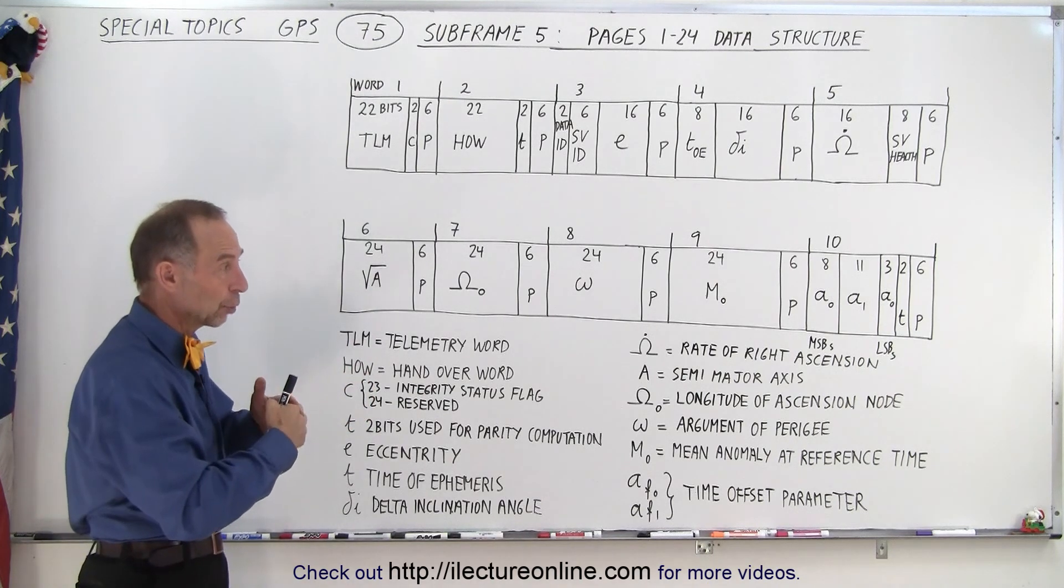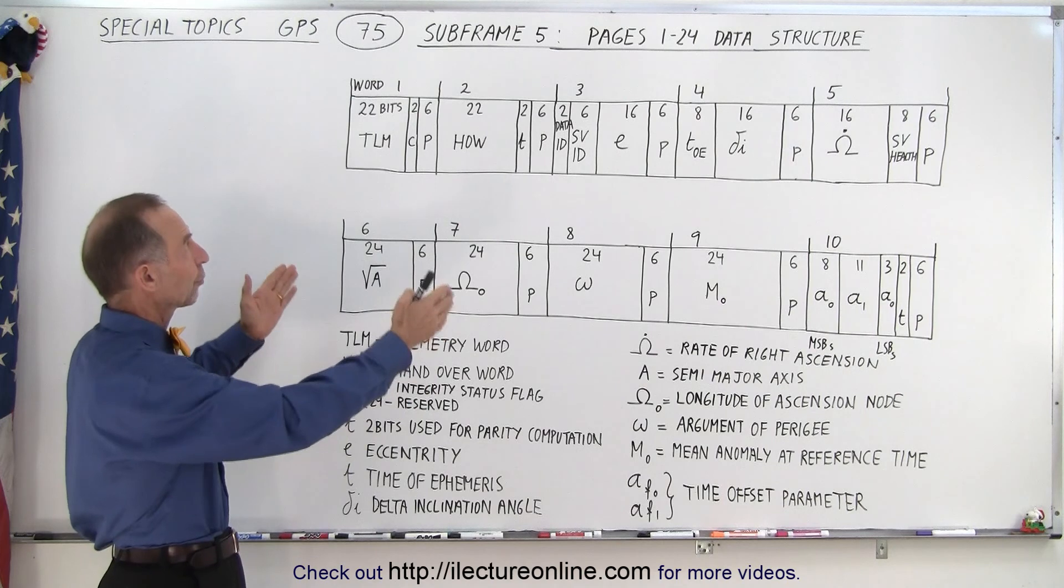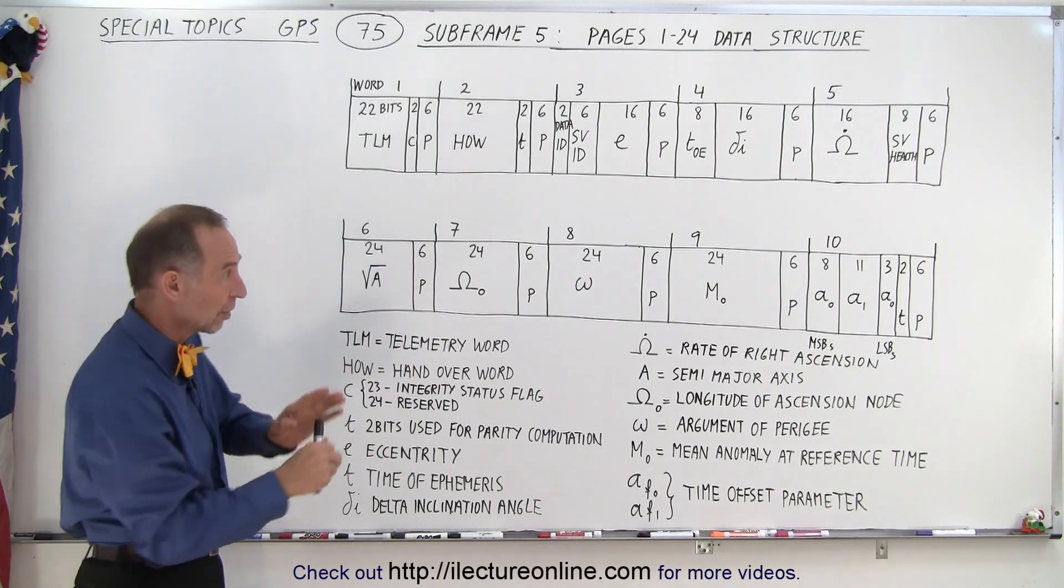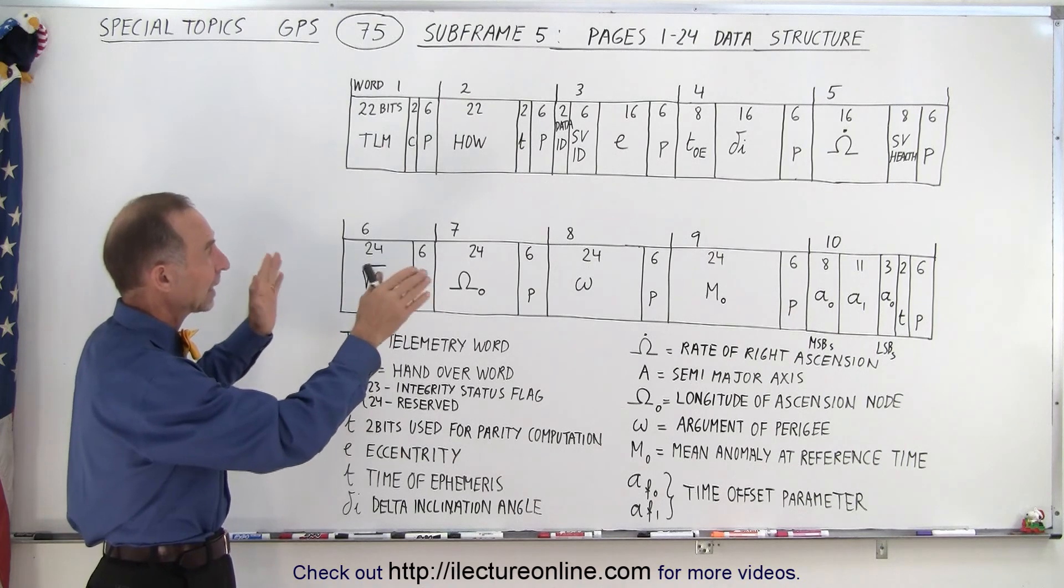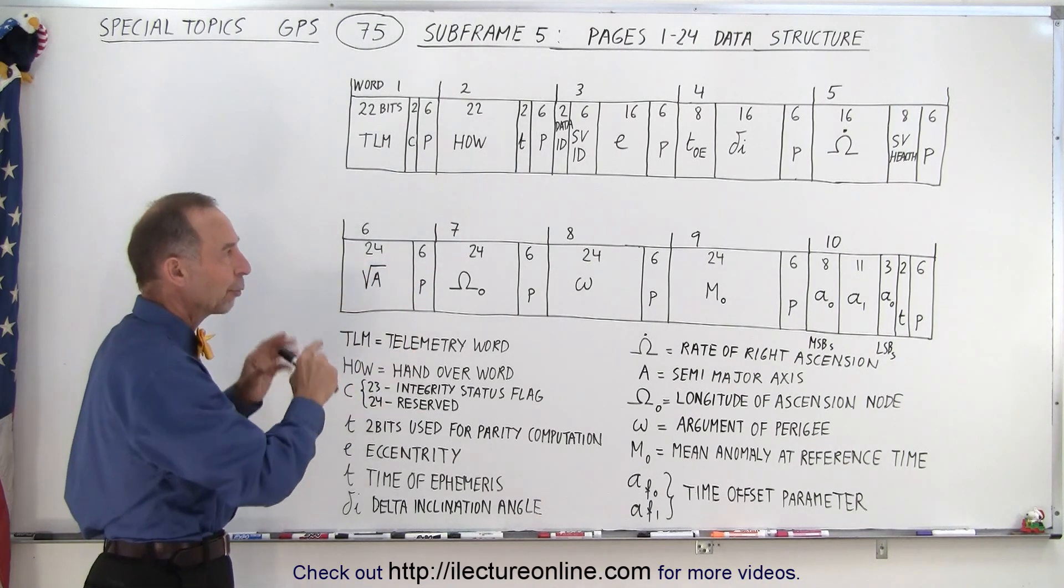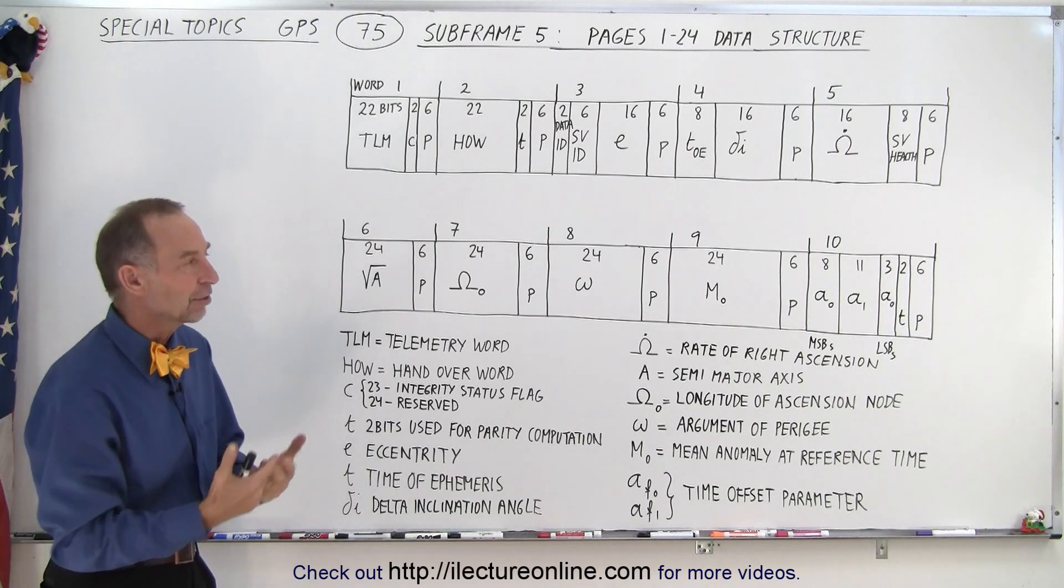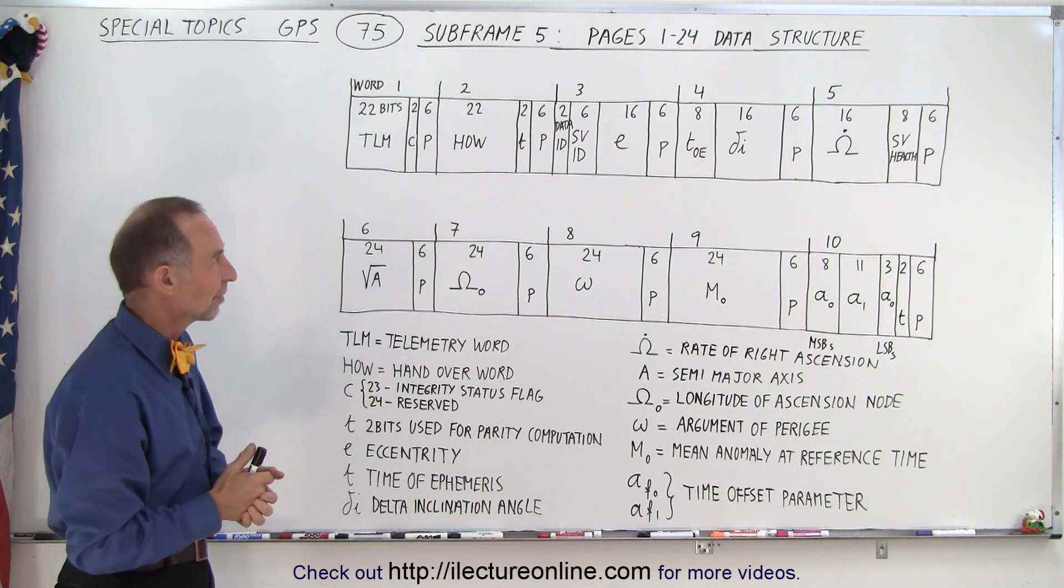And so we have a total of 24 satellites that can be accounted for in subframe 5 pages 1 through 24 and 8 additional satellites with 8 additional pages in subframe 4 that also contains the same structure with the same type of information again for each for a different satellite.